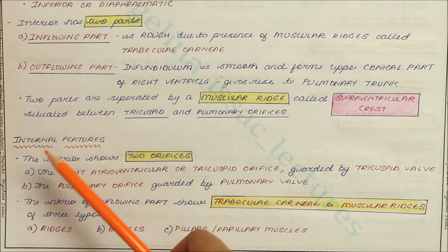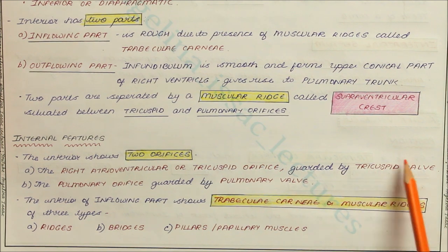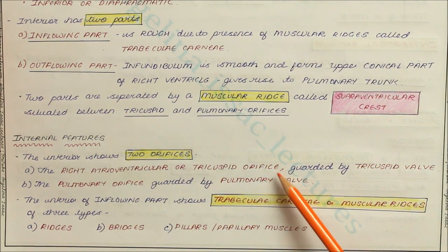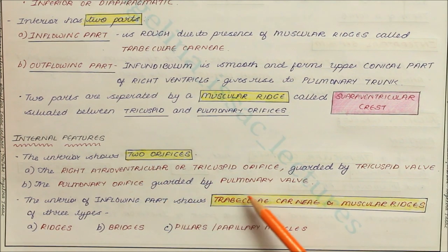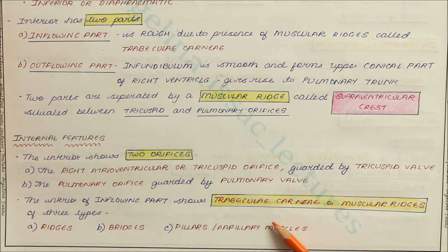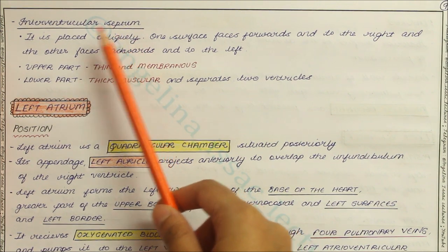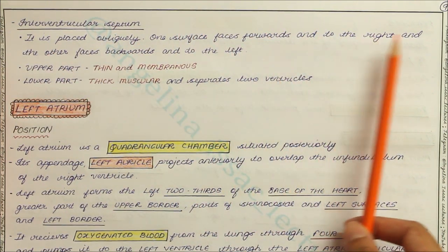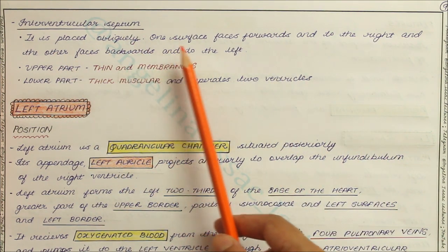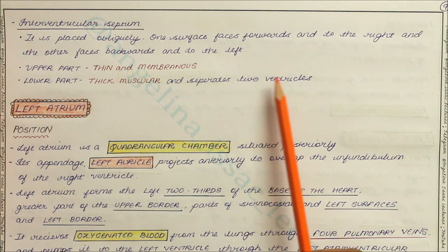Looking at the internal features: the interior shows two orifices — the right atrioventricular or tricuspid orifice guarded by the tricuspid valve, and the pulmonary orifice guarded by the pulmonary valve. The interior of the inflowing part shows trabeculae carnea or muscular ridges of three types: ridges, bridges, and pillars or papillary muscles. Papillary muscles are of three types — anterior, posterior, and septal — connected to the cusps by chordae tendineae. The interventricular septum is placed obliquely; one surface faces forwards and to the right, the other backwards and to the left. The upper part is thin and membranous, while the lower part is thick, muscular, and separates the two ventricles.